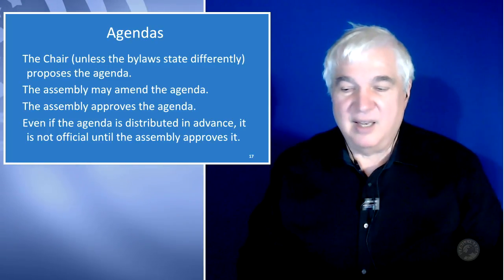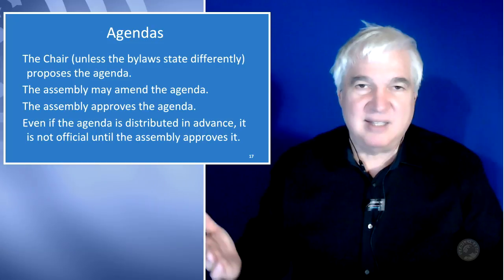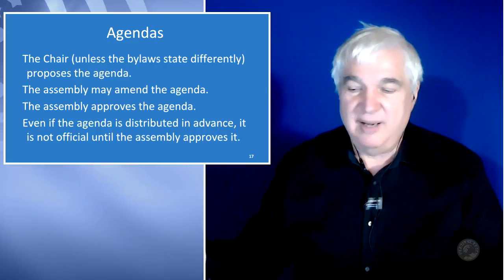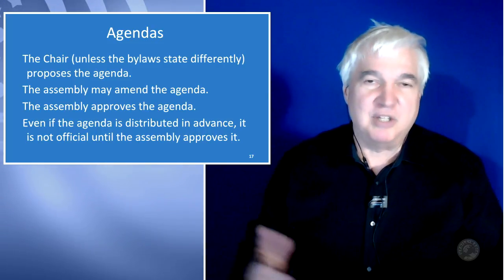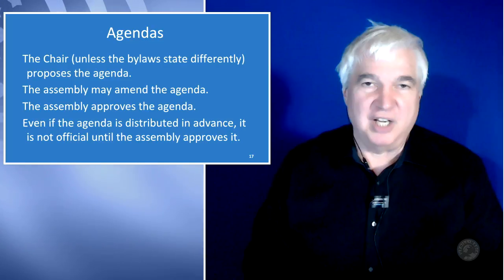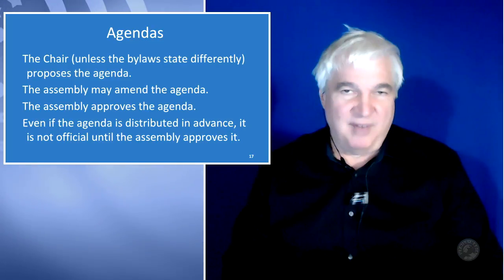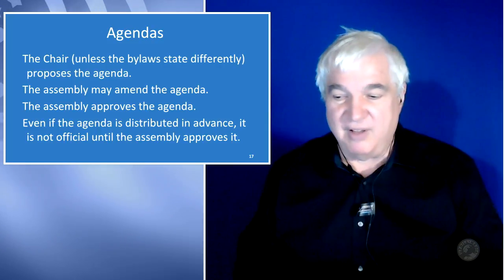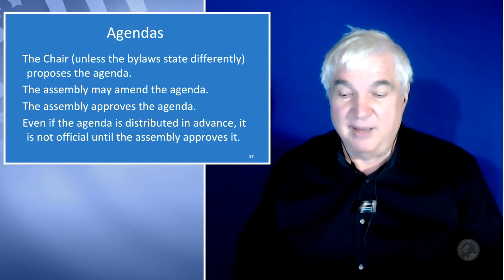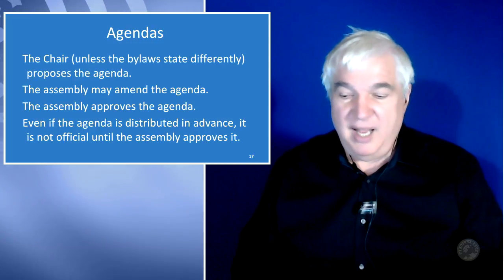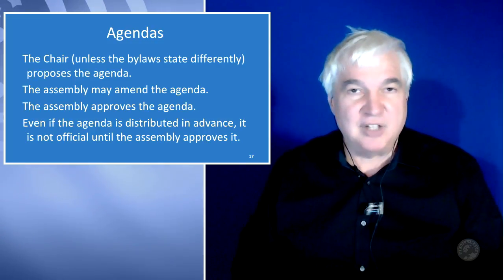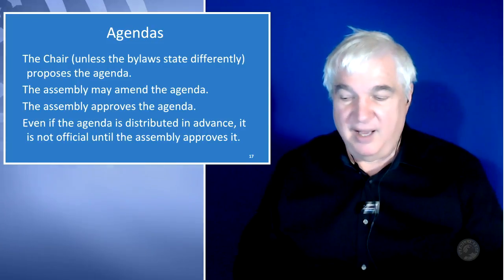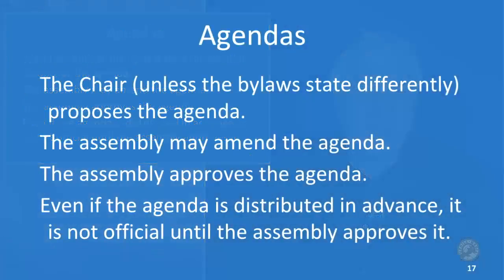The base assumption is that the chair has the responsibility of proposing an agenda, and it's their responsibility to make sure that everything people want to talk about is built into the agenda so you don't have to have a food fight. The assembly may amend the agenda, and the assembly has to approve the agenda. Even if the agenda is distributed in advance, it is not official until the assembly approves it.